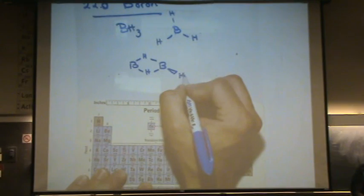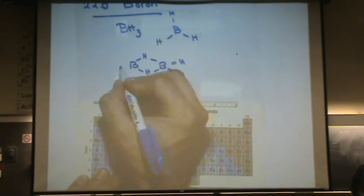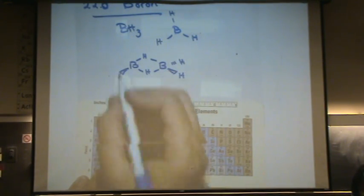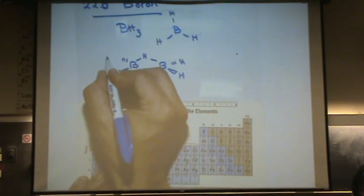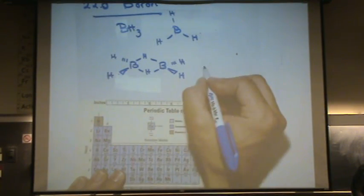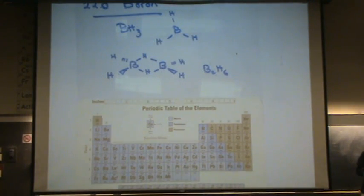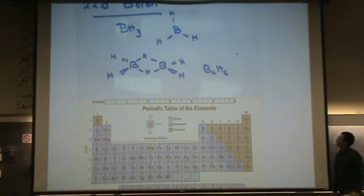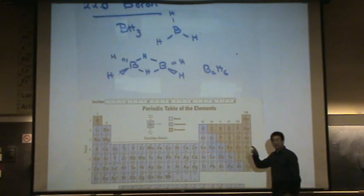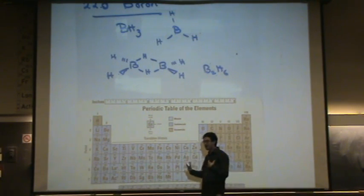And this is a dimer. You've seen dimers before with aluminum and beryllium. This is B2H6. That bond to the hydrogen in the middle is actually kind of a half bond on each side.